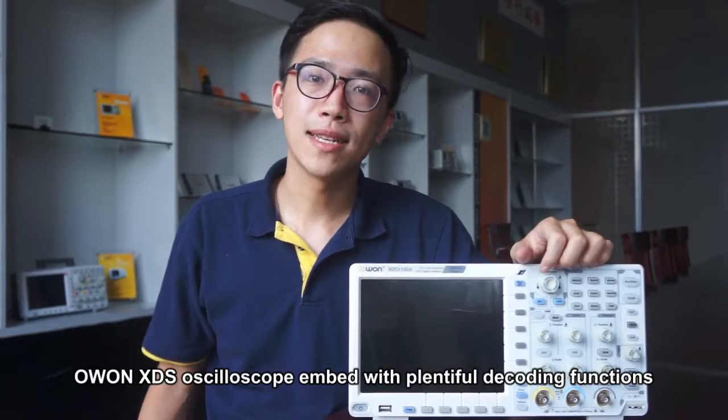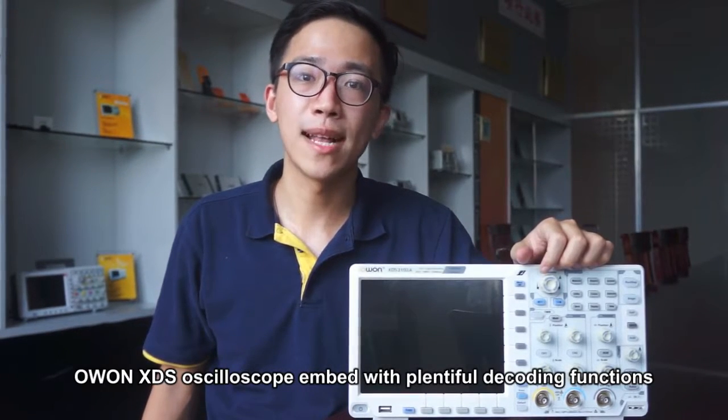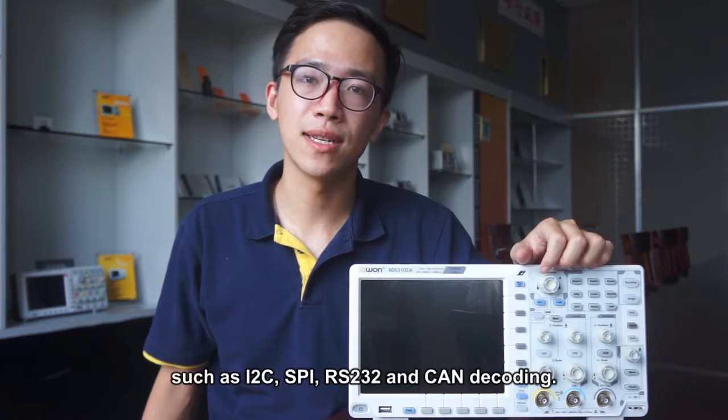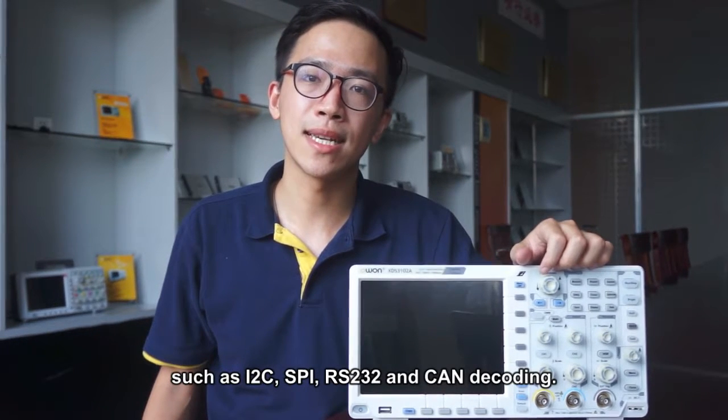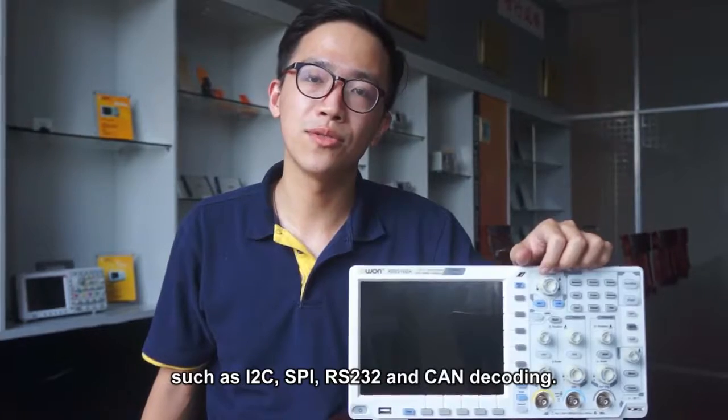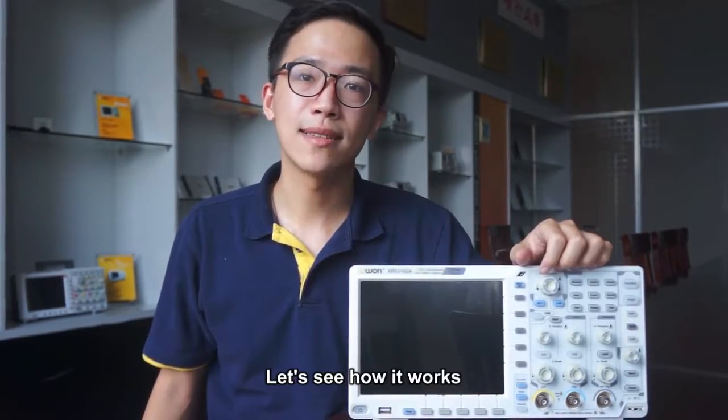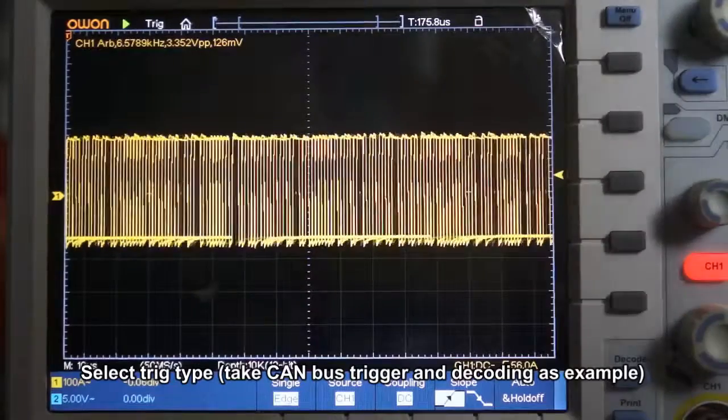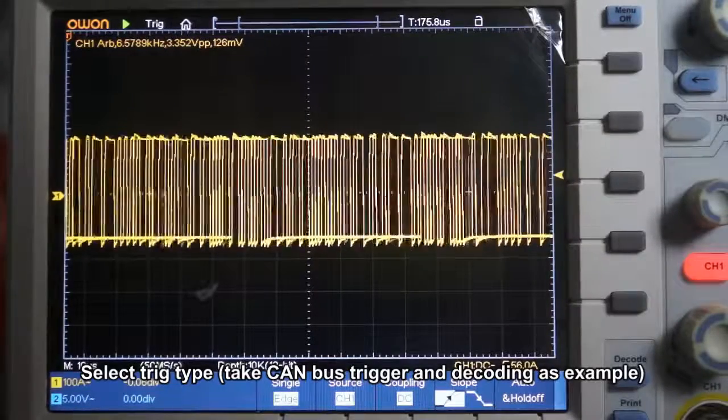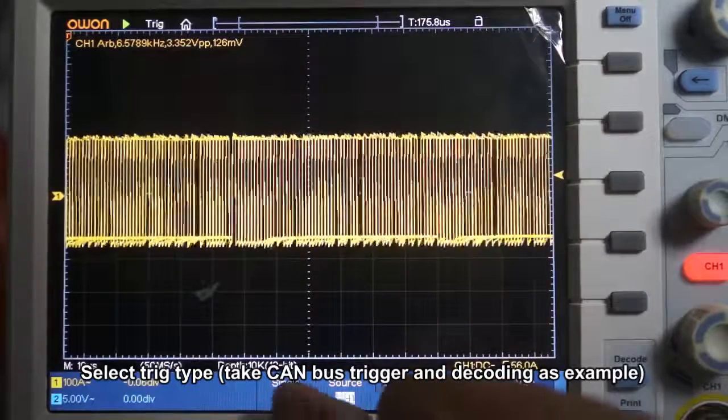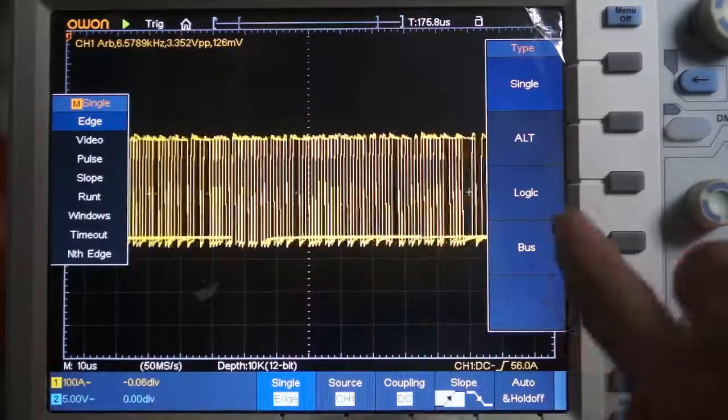OWON XDS oscilloscope inbound with 24 decoding functions such as I2C, SPI, RS232 and CAN decoding. Let's see how it works. Select Trigger Type. Take CAN bus trigger and decoding as example.